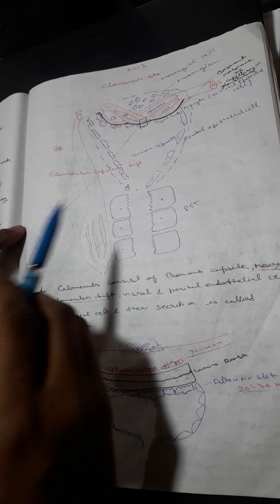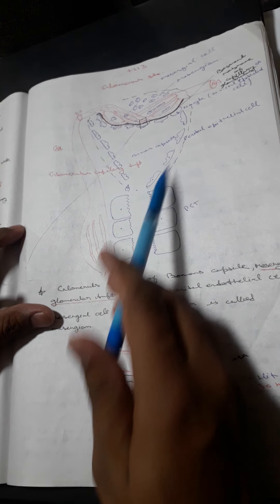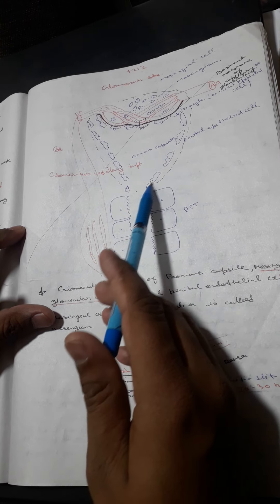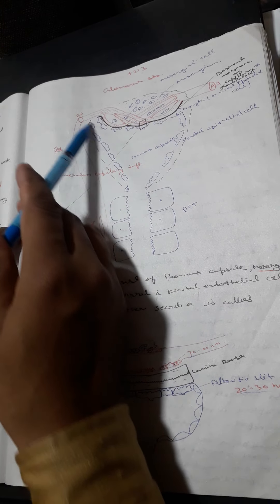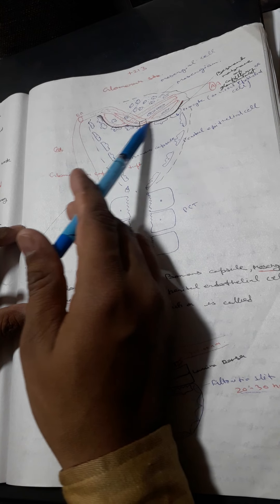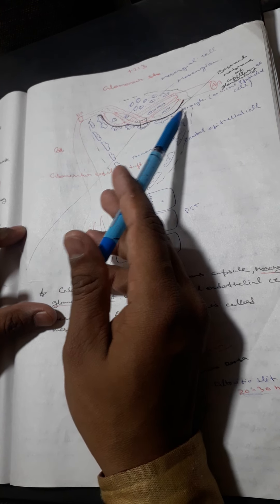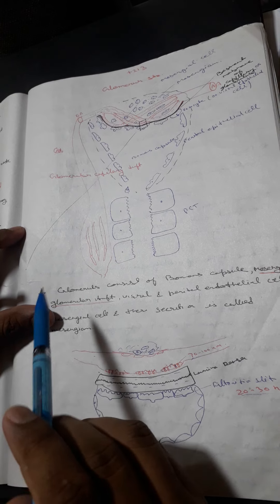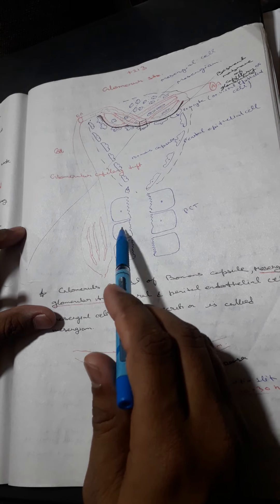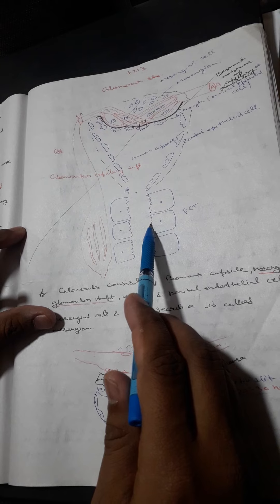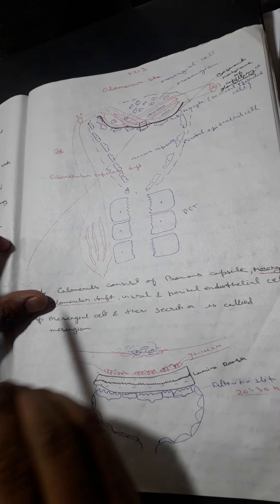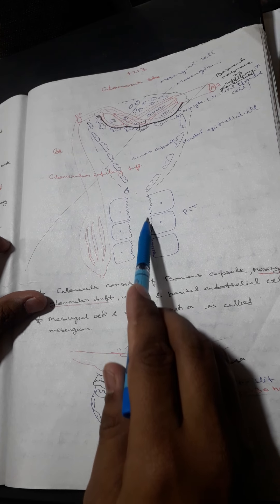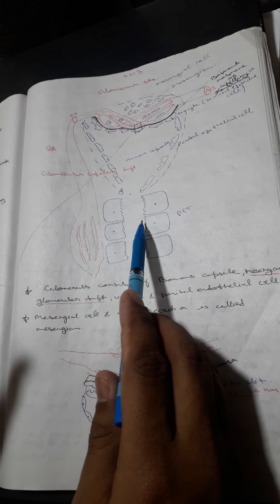The outer layer of Bowman's capsule consists of parietal epithelial cells. The epithelial cells attached to the glomerular basement membrane are called podocytes. Moving out of the glomerulus, the PCT is present, lined by cuboidal cells with brush borders. These brush borders increase the surface area about 20 times, which helps in absorption.